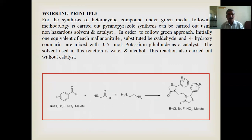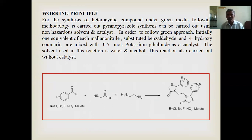Working principles: For the synthesis of heterocyclic compounds under green media, the following methodology is carried out. Pyran-pyranose synthesis can be carried out using non-hazardous solvents and catalyst. In order to follow the greener approach, initially one equivalent of each malononitrile, substituted benzaldehyde, and 4-hydroxycoumarin are mixed with 0.5 mol potassium phthalate as a catalyst. The solvent used in this reaction is water and alcohol. This reaction is also carried out without catalyst.